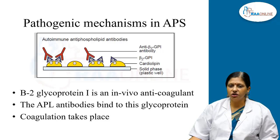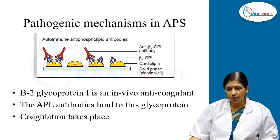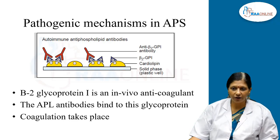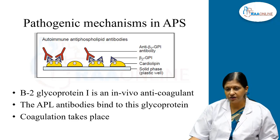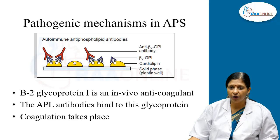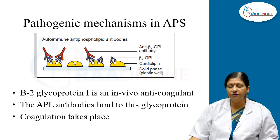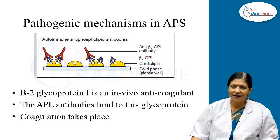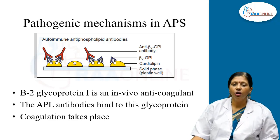Let us understand the pathogenic mechanisms in antiphospholipid antibody syndrome. These autoimmune antiphospholipid antibodies are of various types. They can be anti-beta-2 glycoprotein-1 antibody, and this beta-2 glycoprotein-1 is an in vivo anticoagulant — it prevents coagulation inside the human body. These antibodies bind to a glycoprotein called beta-2 glycoprotein, which is a cardiolipin antigen present on the plasma membrane of blood cells. The presence of these antibodies leads to coagulation and predisposes the patient to microcoagulation in the small vessels.